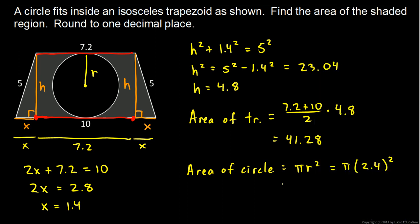So the area of the circle is equal to 18.1. And so then the area of the shaded region will be the area of the trapezoid. That's 41.28 minus the area of the circle, minus 18.1.